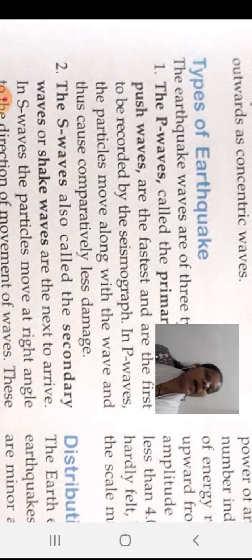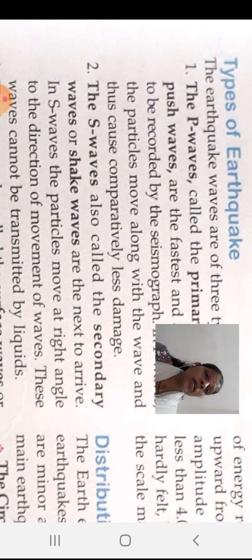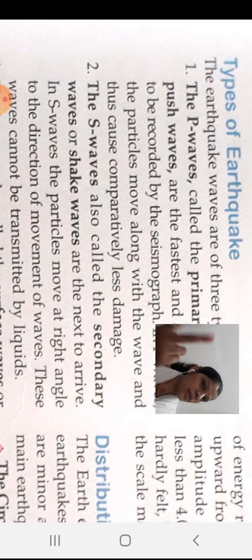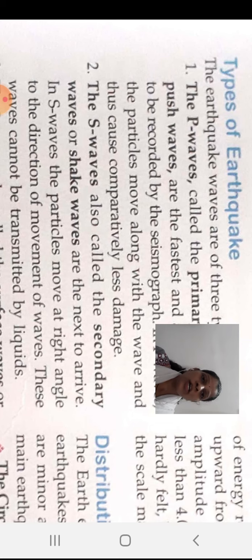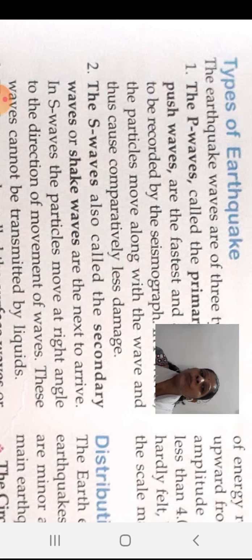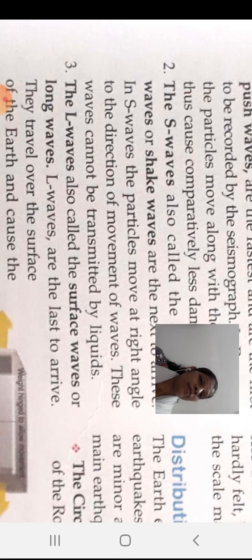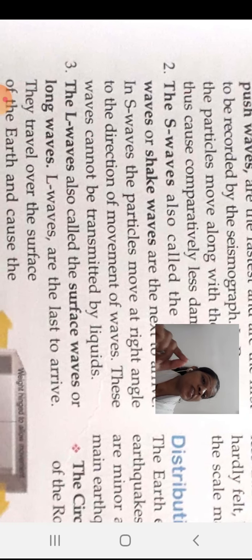Now, S waves are also called secondary waves — P for primary, S for secondary — and they are also called shake waves. S waves arrive next after P waves. In S waves, particles move at right angles to the direction of wave movement. These waves cannot be transmitted through liquids. Secondary waves do cause some damage, but not as much as L waves.